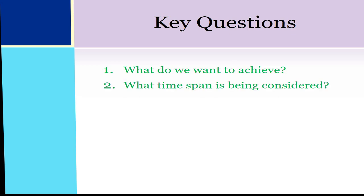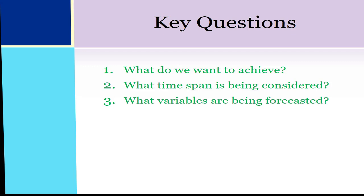The next question is: what time span is being considered? Since this is a new company, we don't have historical data. We just have the current year balance sheet and we want to find out the values for next year. The next question is: what variables are being forecasted? If you look at a detailed balance sheet, there are a lot of variables, but for this example I have chosen the most important ones — common items found in the balance sheet such as accounts receivable, inventory, property plant and equipment, short term loan, and accounts payable.